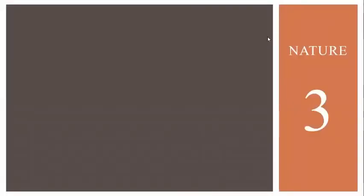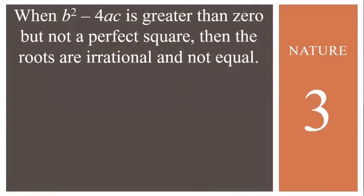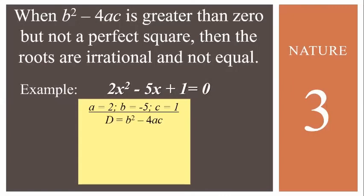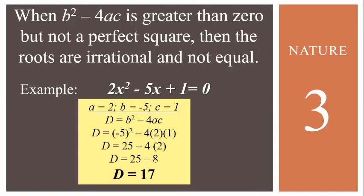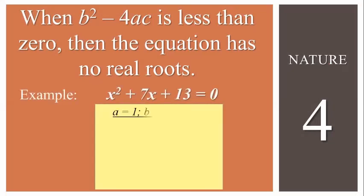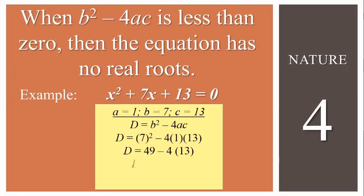When B squared minus 4AC is greater than 0 but not a perfect square, the roots are irrational and not equal. For instance, 2x squared minus 5x plus 1 equals 0, with A as 2, B as negative 5, and C as 1, gives D equal to 17. Since 17 is not a perfect square but is greater than 0, the roots are irrational and not equal. For the last case, when B squared minus 4AC is less than 0, the equation has no real roots. For example, x squared plus 7x plus 13 equals 0 gives D equal to negative 3, so the roots are imaginary.